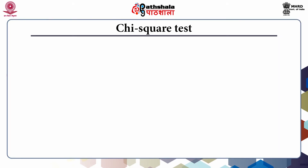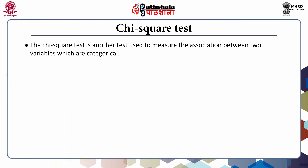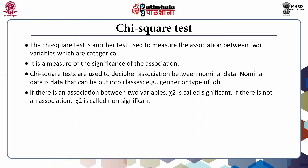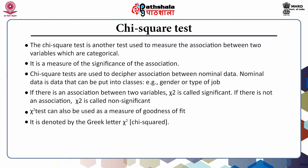The chi-square test is another test used to measure the association between two variables which are categorical. Unlike Pearson's or Spearman's correlation coefficients which reflect the strength of an association, the chi-square test is a measure of the significance of the association. It is used to decipher association between nominal data — data that can be put into classes, such as gender or type of job. If there is an association, chi-square is said to be significant; if not, it is non-significant. Chi-square can also be used as a measure of goodness of fit. It is denoted by the Greek letter chi, and its formula is given below.